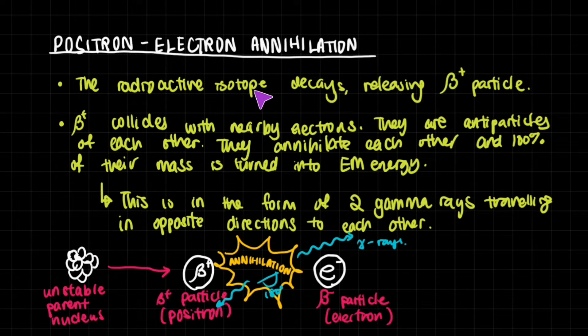Well, the radioactive isotope decays in the body and it will release the beta plus particle as we've already said that it would. The beta plus particle, which is a positron, collides with nearby electrons and electrons are everywhere, so we don't have to worry about that. Positrons aren't everywhere, so we have to make it through radioactive decay.